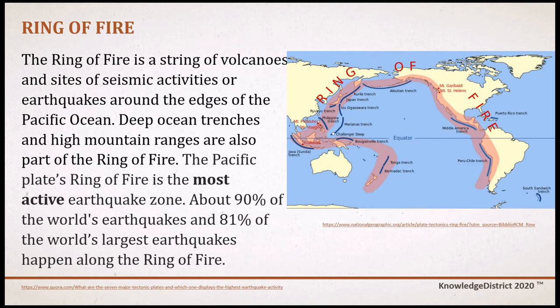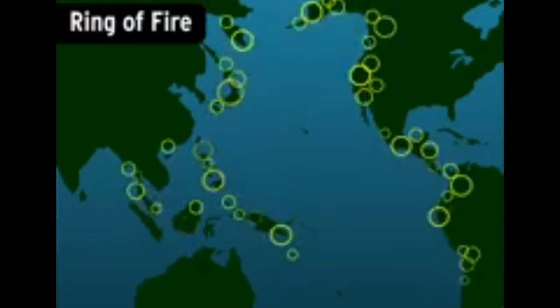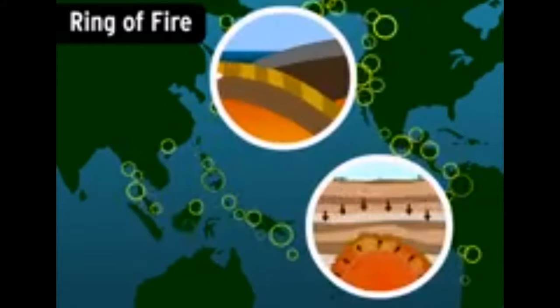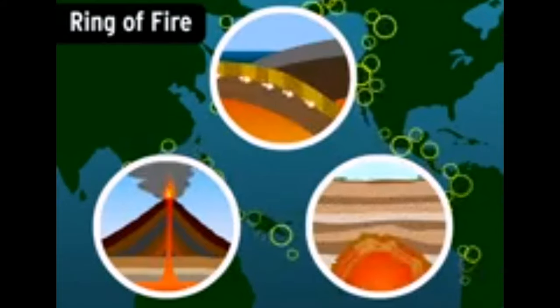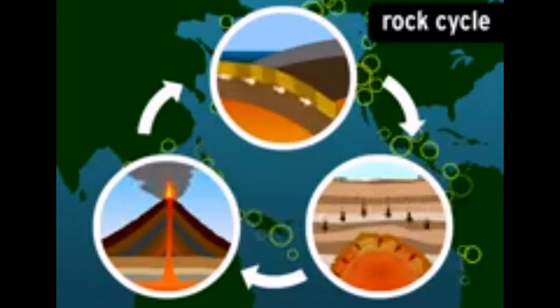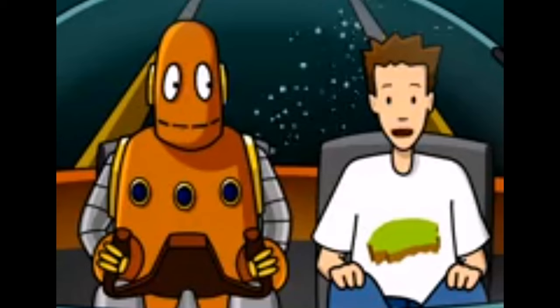The Ring of Fire is a string of volcanoes and sites of seismic activity around the edges of the Pacific Ocean. Deep ocean trenches and high mountain ranges are also part of the Ring of Fire, which is the most active earthquake zone. Dense sedimentary rock making up the Pacific seafloor is subducted, transformed into metamorphic rock through pressure and heat, and recycled as igneous rock through volcanic eruptions. In other words, plate tectonics drives the rock cycle — the constant process of transformation and renewal of the Earth's crust. It also creates our most prominent geologic features.